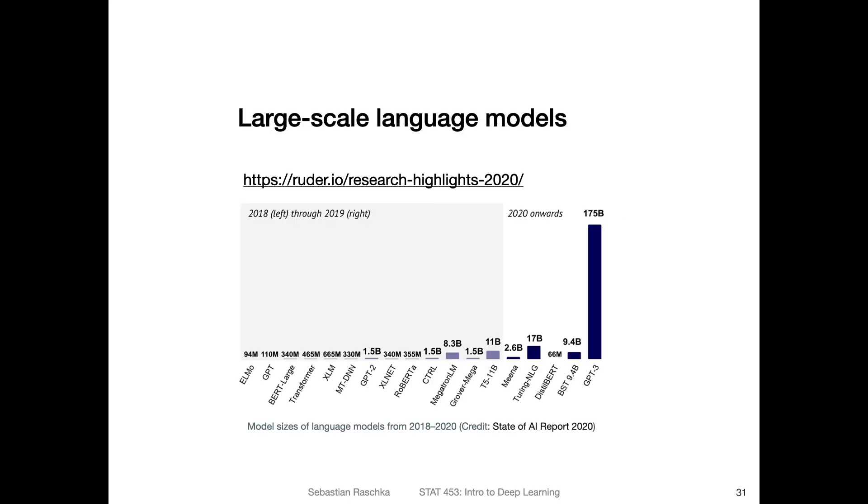Also, a recent trend is the work on large-scale language models. It started in 2018, where people trained models with 94 million parameters. Then they scaled it up. You probably heard about GPT-2, I think, in 2019. Now there's GPT-3 with 175 billion parameters. Language models become bigger and bigger. Of course, there are also research approaches that focus on keeping things small...